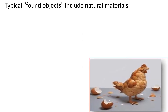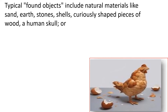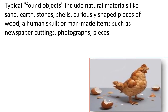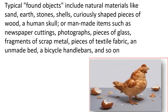Typical found objects include natural materials like sand, earth, stones, shells, curiously shaped pieces of wood, a human skull, or man-made items such as newspaper cuttings, photographs, pieces of glass, fragments of scrap metal, pieces of textile fabric, an unmade bed, bicycle handlebars, and so on. From the picture shown, the found object from a chicken is the shell of an egg, which can be transformed into art.